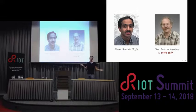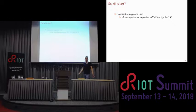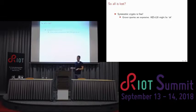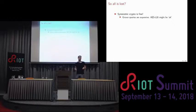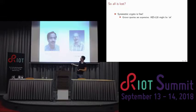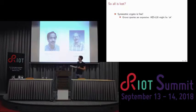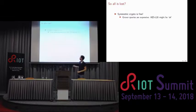Does this mean all is lost? Well, symmetric crypto is roughly fine. Grover queries are expensive, so even current AES-128 might be okay. And even if you're not confident in that, you can just double your key size. Because square root of N means if you double the number of bits, you go back to the original security level. So symmetric is generally fine — asymmetric crypto is where there's a lot of work to do.